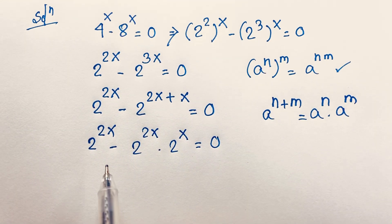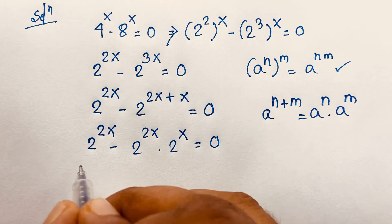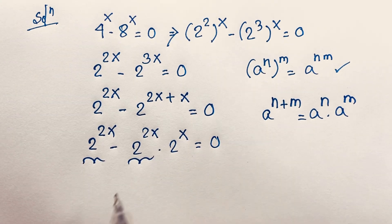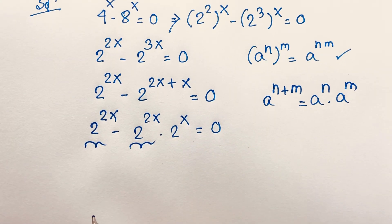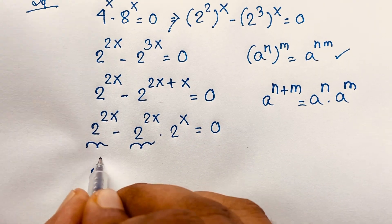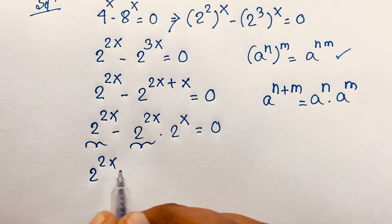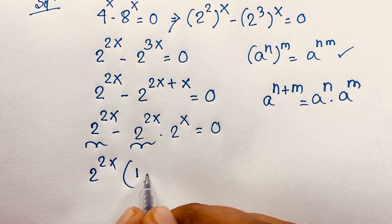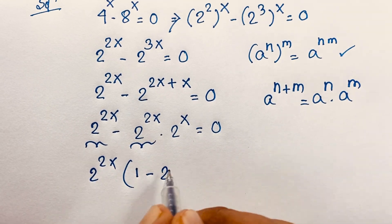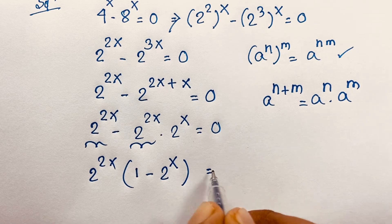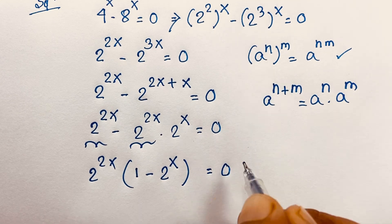Now you can say here, 2 to the power 2x — this is 2 to the power x — so 2 to the power 2x is common. If I take 2 to the power 2x as common, this divides this, giving 1, and this divides this, giving 2 to the power x, is equal to 0.